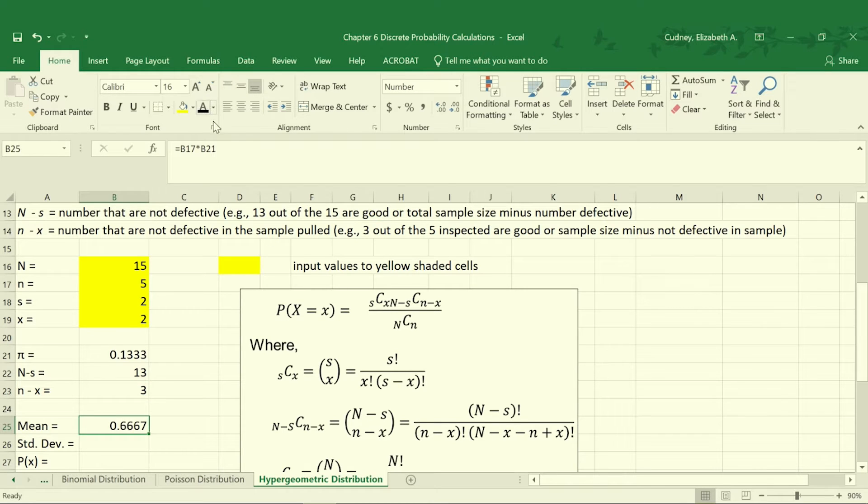Our mean is going to be equal to our lowercase n, which was B17, multiplied times pi, which was B21. So that's our number sampled, the 5, multiplied times the probability it will be defective. And then our standard deviation is equal to the square root of B17, which is our lowercase n, multiplied by B21, which is our pi, which is multiplied times 1 minus our pi. And then that value, when we take the square root, is multiplied by the square root of B16, our capital N, minus our lowercase n, B17, divided by our capital N, our total sample size, B16, minus 1.